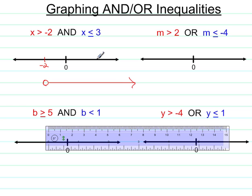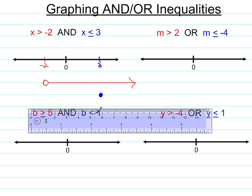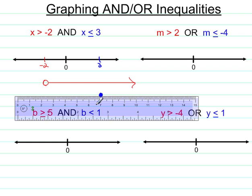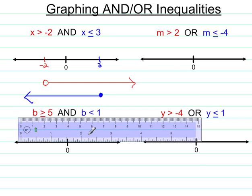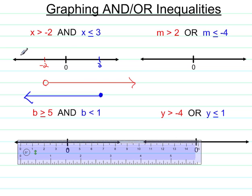Similarly, we'll graph x is less than or equal to 3. Put 3 on the number line. This will get a solid dot because it includes the 3. And it's always good to use your ruler to assist in doing that. Well, that's step one, which was to graph both individual inequalities.